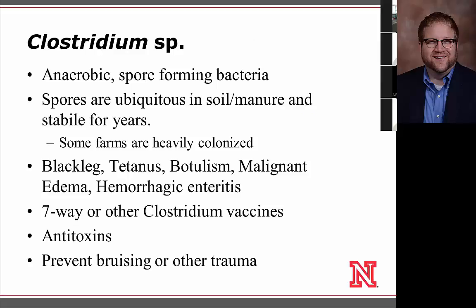Clostridium species are another important manure-borne bacterium. They are anaerobic, growing in environments without oxygen, and form spores that are very stable in soil and manure, becoming heavily ubiquitous on some farms. These spores can cause diseases including blackleg, tetanus, botulism, malignant edema, and hemorrhagic enteritis. Strategies include vaccinating with seven-way or other Clostridium-based vaccines, using antitoxin when animals are at risk during procedures like castration or shearing, and preventing risky practices such as bruising or trauma that allow these bacteria to infect animals.